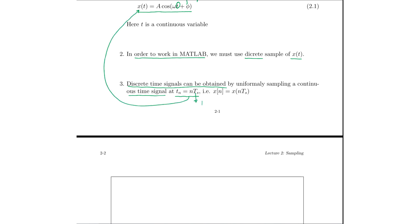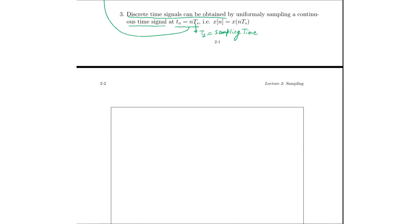Here, Ts is the sampling time. In order to show the derivation behind this, what we have is x(t) = A·cos(ωt + φ). Note that t is the continuous time variable. What we have to do is discretize this time variable, and that can be done by substituting t = nTs.